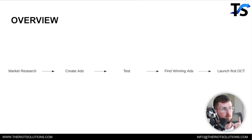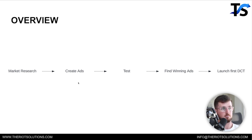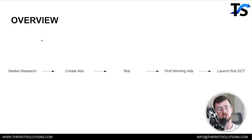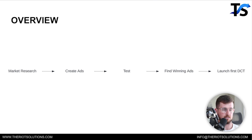This video is going to go directly into it. There are a couple of things we're going to look at: number one, market research; creating the ads; our first test we're going to launch; finding winning ads from that test; and then launching our first DCT. That's going to be the order in which we do everything. If you don't know what DCT is, it's a dynamic creative test and it's how we do all of our testing for an account that's already been launched.